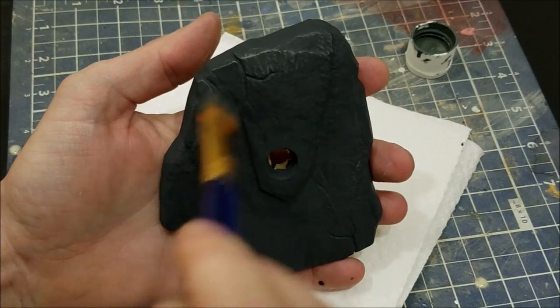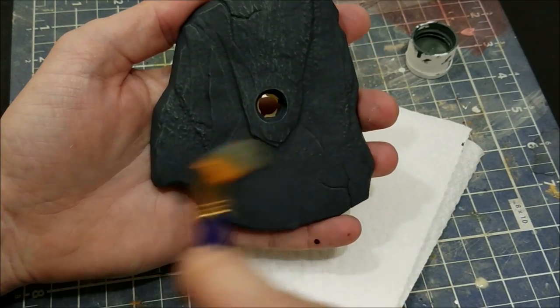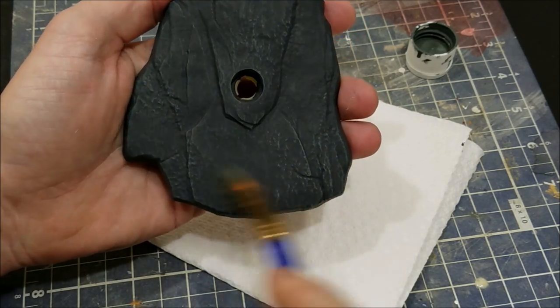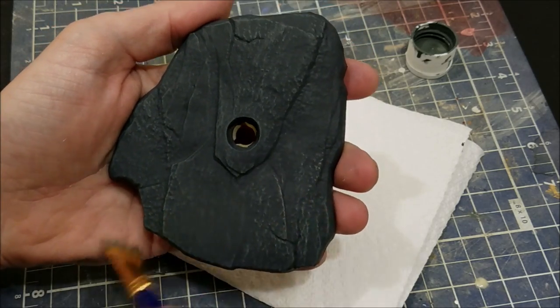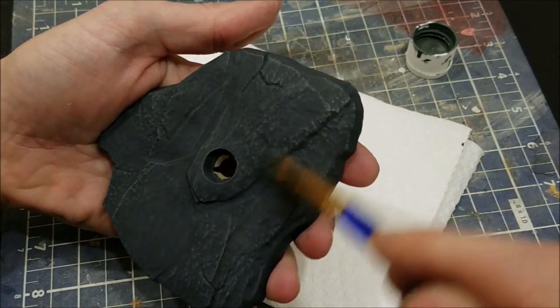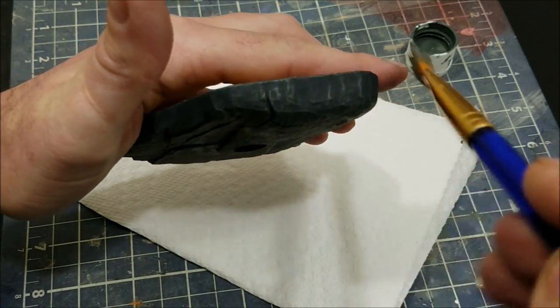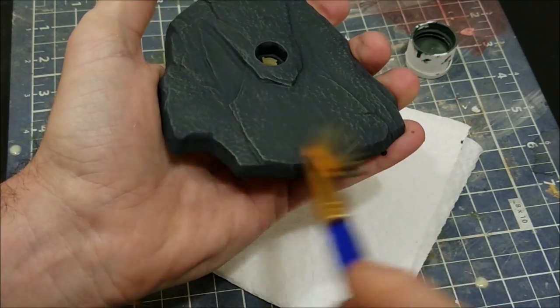This is going to give it that effect of a slab of granite or a flat rock on a river. You really want to do a heavy-handed dry brush this go around, but make sure you don't have a ton of paint on the brush because it will get streaky and chalky looking.